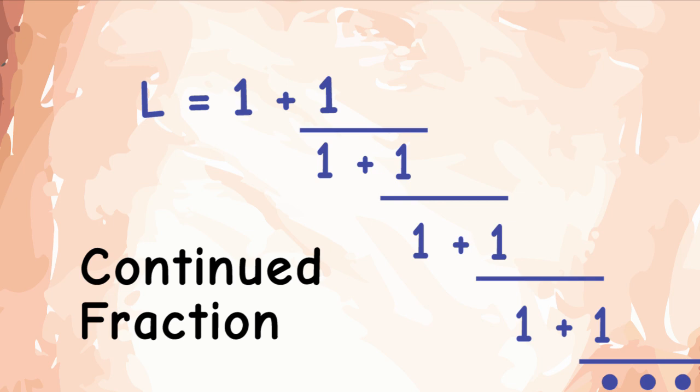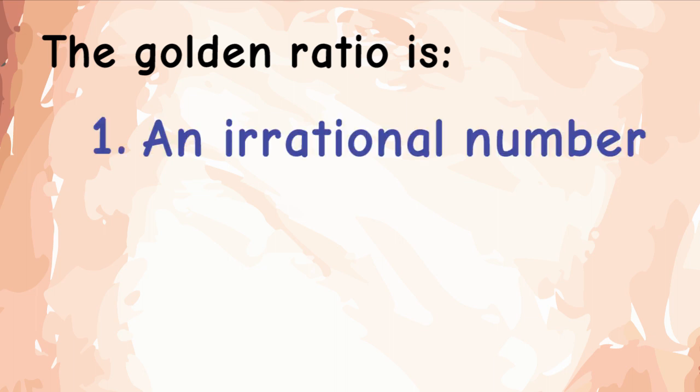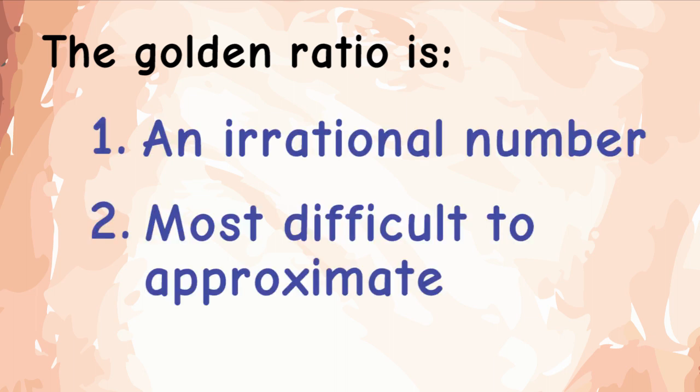Representing the golden ratio in the form of a Continued Fraction is instrumental in understanding two important facts. The golden ratio is 1 an irrational number, 2 the most difficult to approximate by a rational number. Let's tackle one thing at a time.